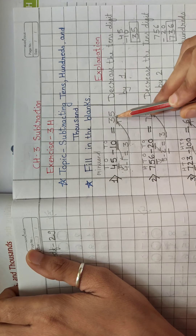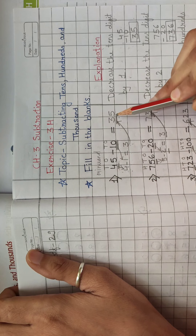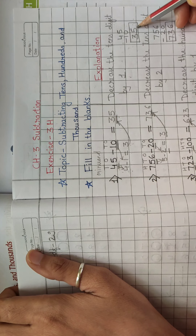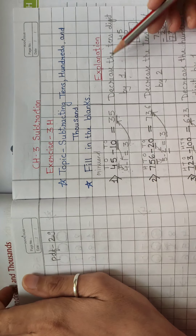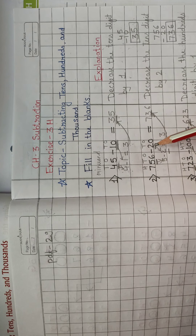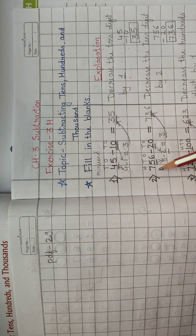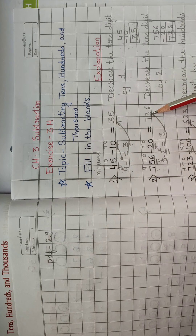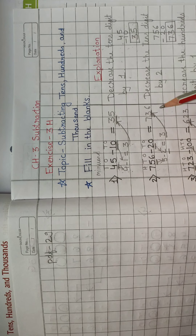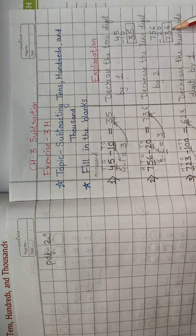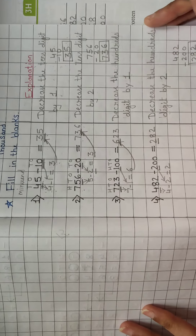If you are not satisfied whether you are right or wrong, solve it the long way — that will clear your confusion and you can check. I have done the second one too: tens digit is 2 because of 20, so 2 minus 2 equals 0. Wait — here we have 756 minus 20, so the answer is 736. You can check it.